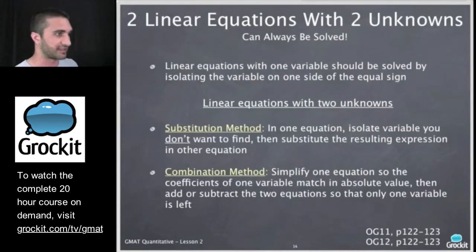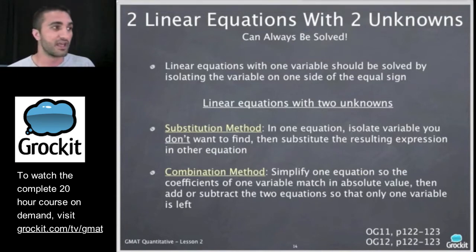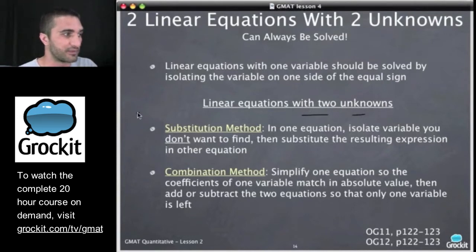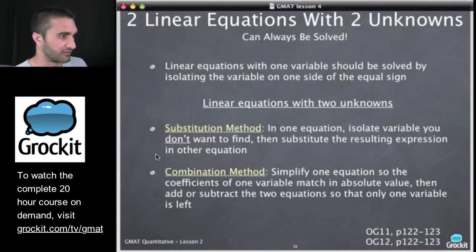We'll cover a couple of examples at the beginning of class next week. I want to talk a little bit about linear equations with unknowns. Two linear equations with two unknowns can always be solved. Just make sure you're not dealing with one equation that just is scaled up. So linear equations with one variable should be solved by isolating the variable on one side of the equal sign. Linear equations with two unknowns, we can handle them in a couple of ways. The substitution method or the combination method. In the substitution method, we isolate the variable you don't want to find. And then we substitute that in the resulting expression in the other equation. The other possibility is combining, where we simplify one equation so the coefficients of one variable match an absolute value. Then we add or subtract the two equations by stacking them.